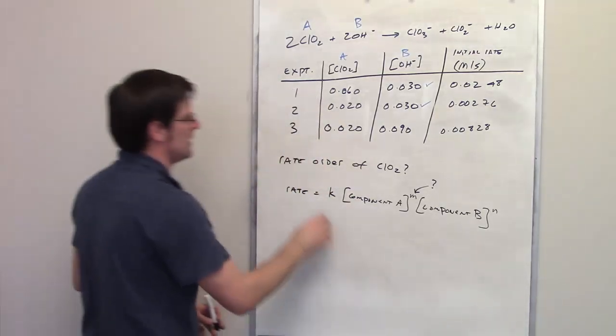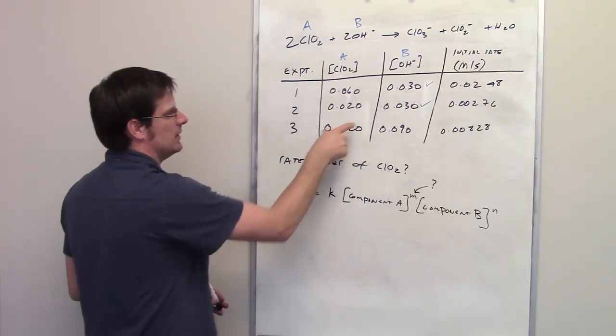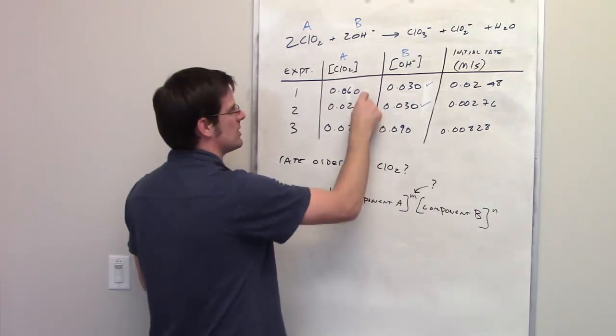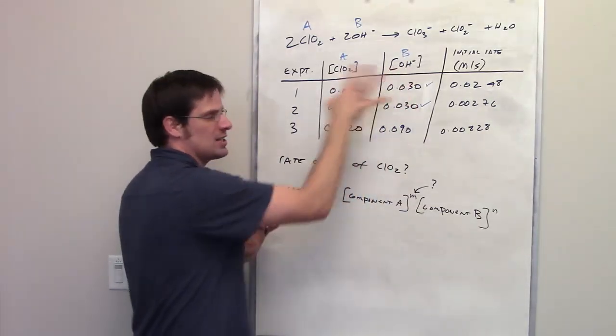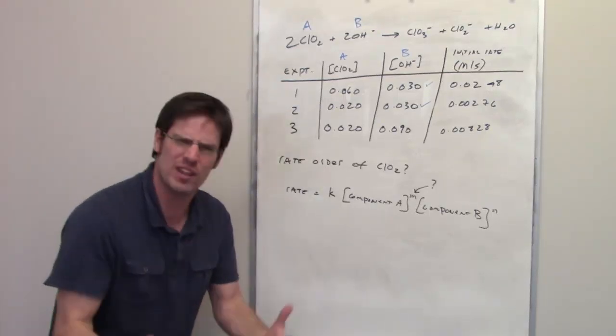The reason is because I've been asked the rate order for chlorine dioxide, component A. So I want to know how does the rate get affected when I change the concentration of component A and not B. That's the reason I only care about experiments 1 and 2.